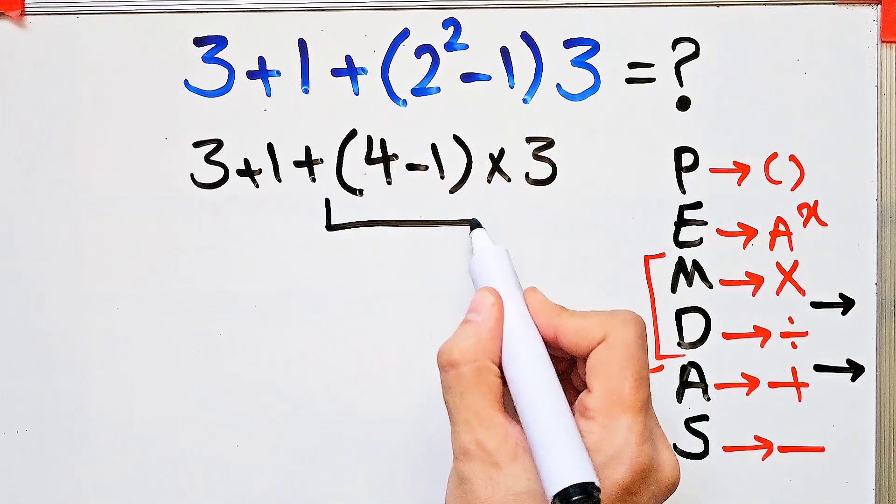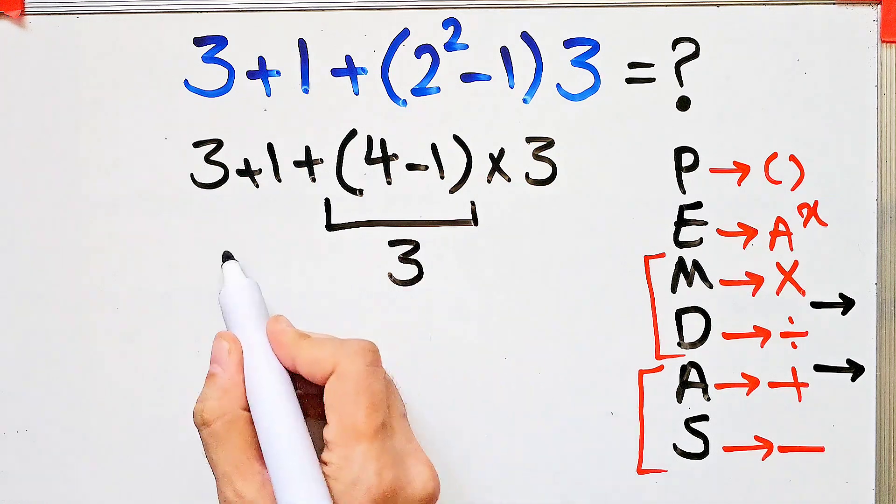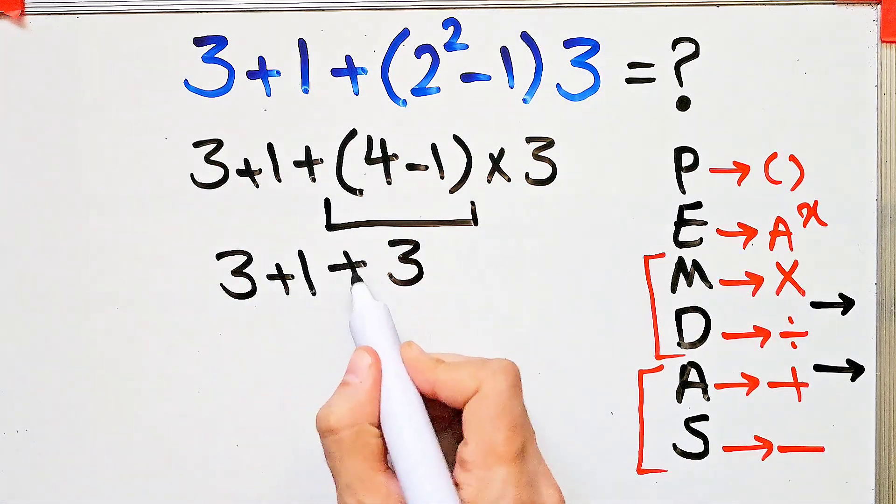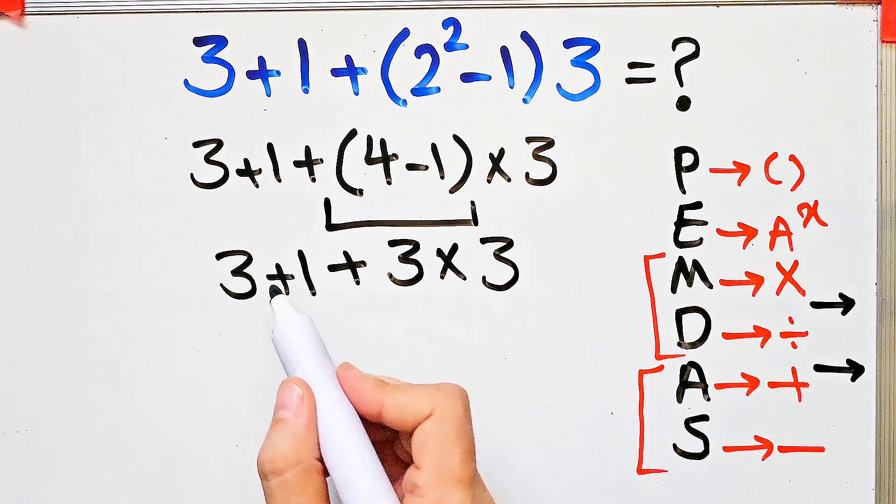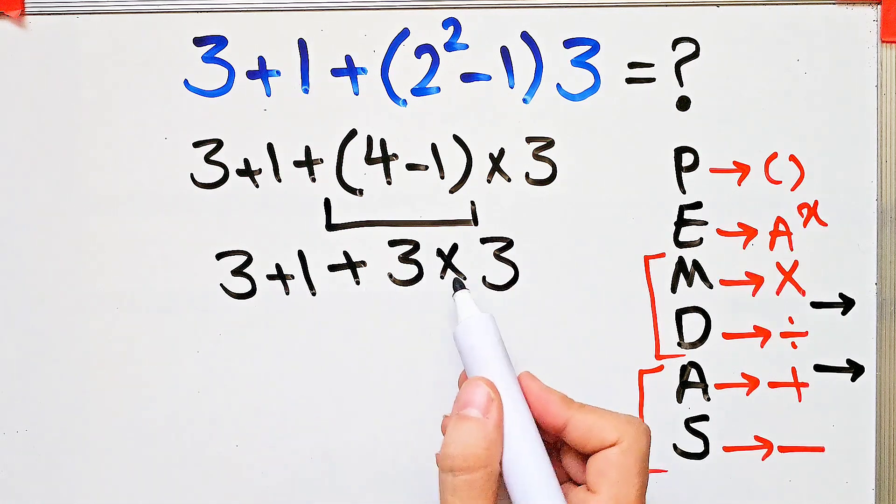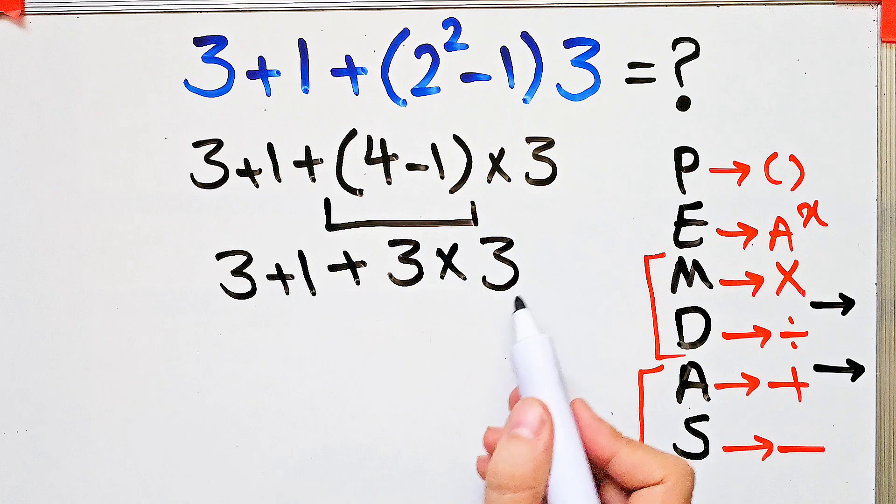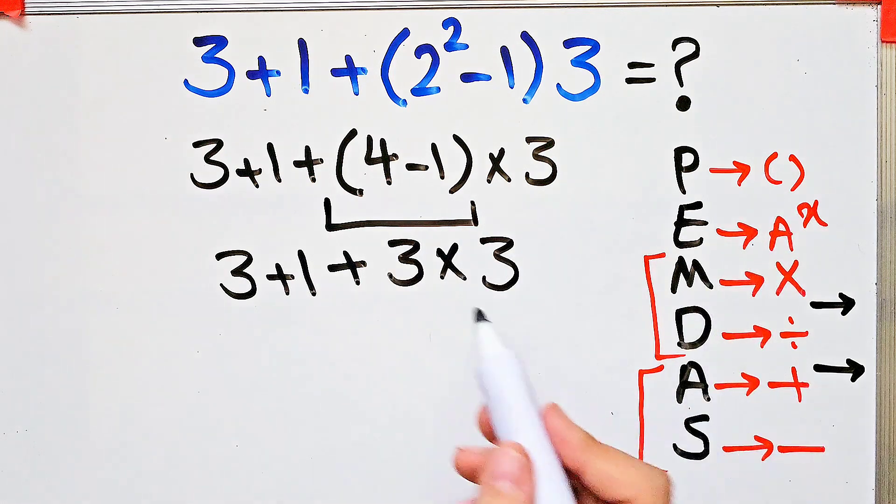Now we have three plus one plus three then times three. Now we have addition and multiplication. First we do this multiplication because multiplication has higher priority than addition.